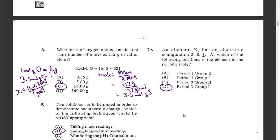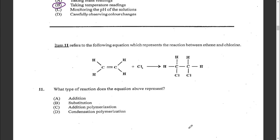Item eleven refers to a reaction between ethene and chlorine. Question eleven asks what type of reaction it represents. It is an addition reaction — specifically addition halogenation — where chlorine gas is added across the double bond, breaking it to form dichloroethane. The answer is A.